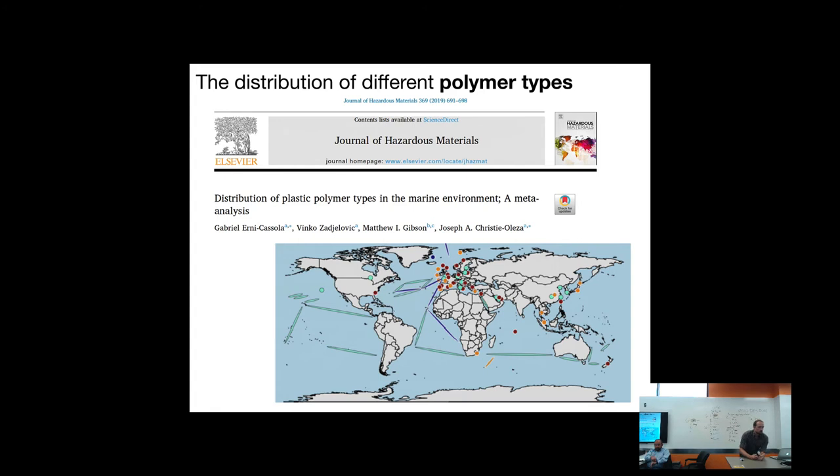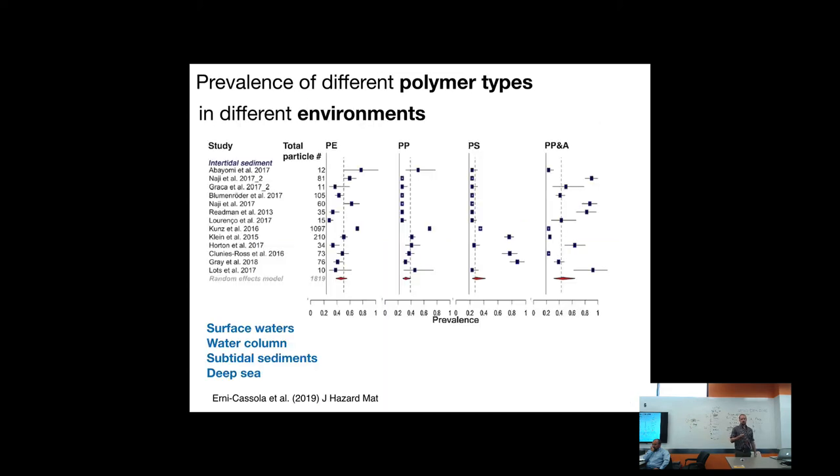Another meta-analysis was published this year concerning systematic analysis of how different polymer types vary in their prevalence, standardizing protocols in different realms and zones of the marine environment. They categorized studies based on the type of polymer being assessed in a particular environment.